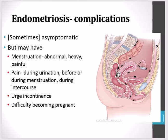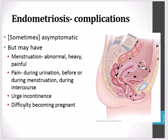Endometrial tissue can be found in many different areas of the body. In some cases, endometriosis is asymptomatic. In symptomatic individuals, menstruation can be heavy and very painful; people can experience pain during urination, before or during menstruation, during intercourse, and urge incontinence. Difficulty getting pregnant is also common. The pain experienced may not just be in the pelvic region — it can occur anywhere the bleeding takes place.